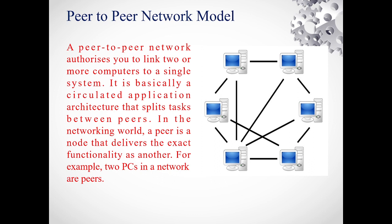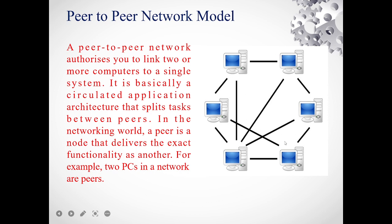In a peer-to-peer network, you can connect only around 10 to 12 computers — it is very limited. As the definition states, it authorizes you to link up to 10 or 12 computers only. It is basically a distributed application architecture, working like a mesh topology where one computer is connected with another.